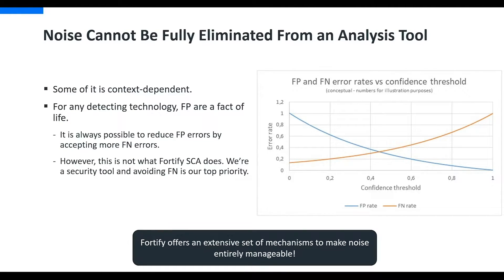One thing to note is that noise cannot be fully eliminated from an analysis tool because it's often context dependent. If you limit the scope to false positives, you run the risk of increasing false negatives. All detection technologies can make two primary types of errors: false positives and false negatives. These depend on the confidence threshold you configure. If you demand a high confidence threshold, false positives decrease, but inversely, false negatives will increase. Some tools do eliminate rules with lower thresholds - while this reduces noise, it comes at the cost of finding true positives. Fortify prioritizes avoiding false negatives and instead offers extensive mechanisms to make noise more manageable while keeping scan integrity.